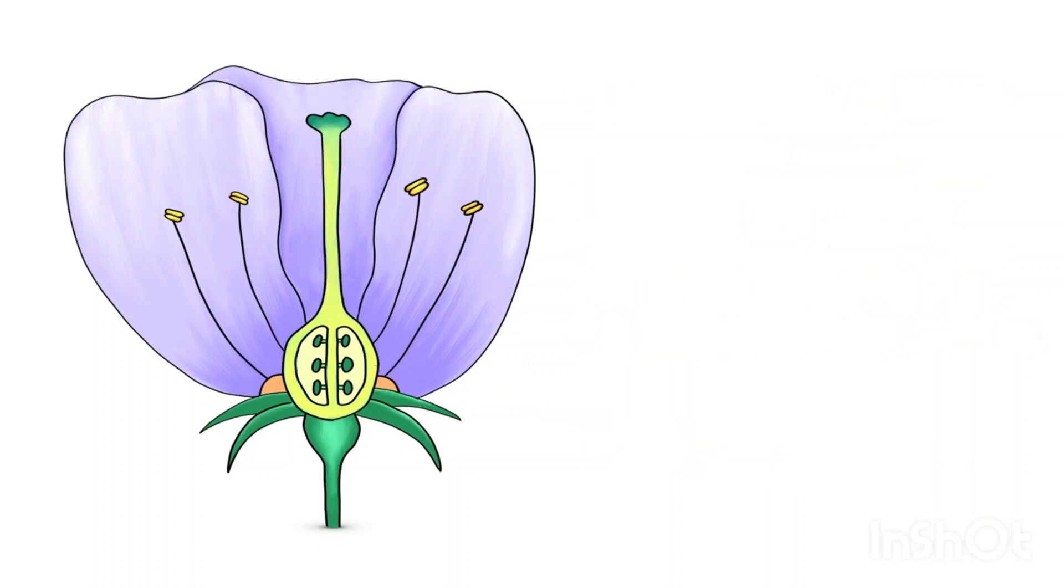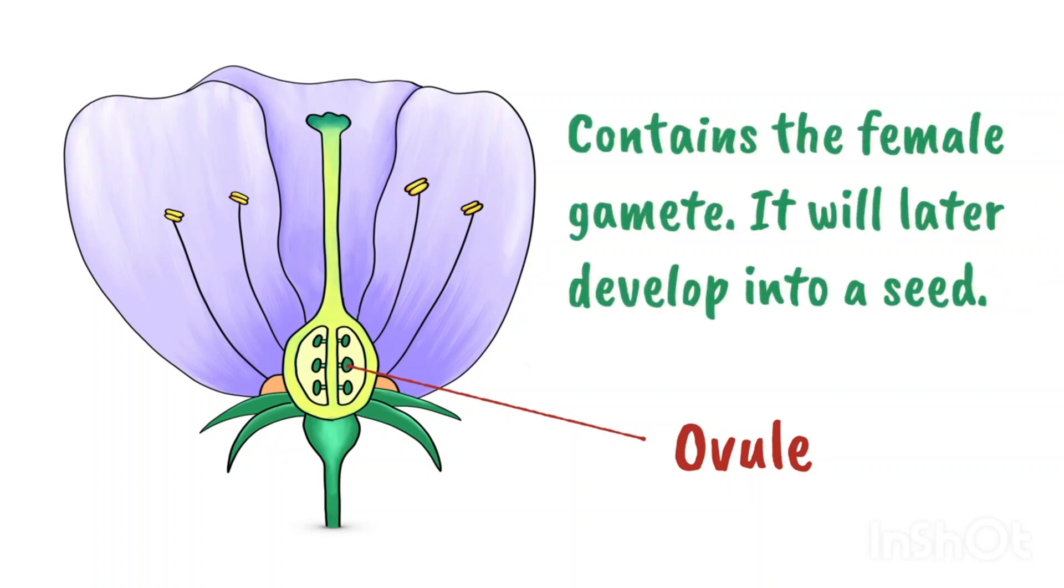Those ovules I mentioned are found here inside the ovary. You can see six ovules in this diagram. It's within the ovule that the female gamete is found. The ovules will go on to form seeds.